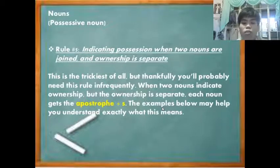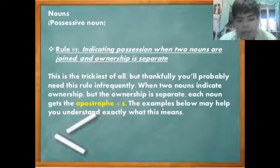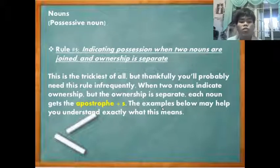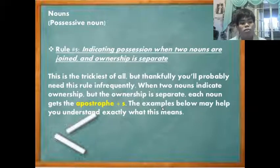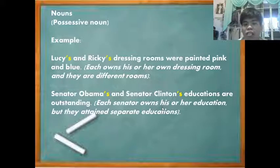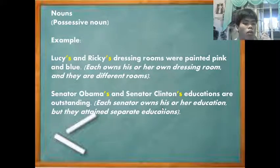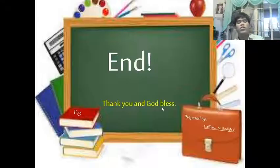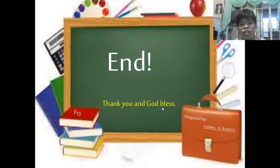The fifth rule is indicating possession when two nouns are joined but ownership is separate. When two nouns indicate ownership of different things, each noun gets the apostrophe plus 's'. For example: 'Lucy's and Ricky's dressing rooms were painted pink and blue.' Here, Lucy possesses her own room and Ricky possesses his own — they each own a separate item — so both get apostrophe 's': Lucy's pink room and Ricky's blue room.